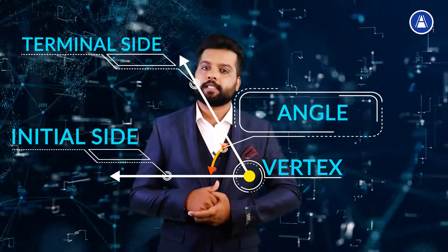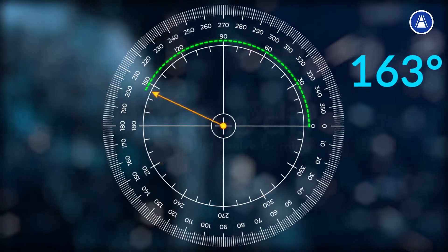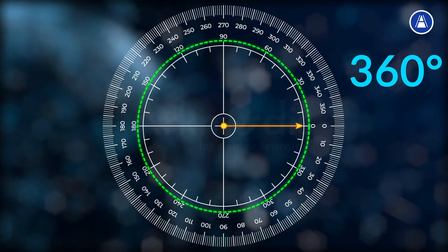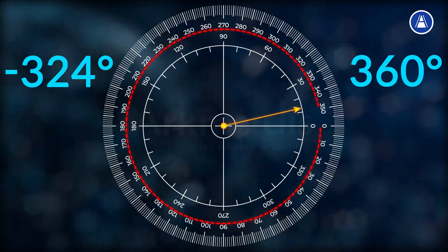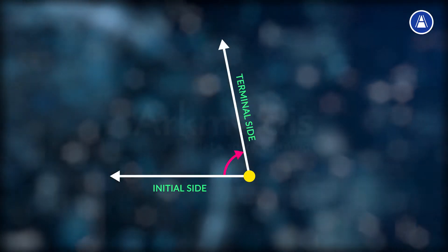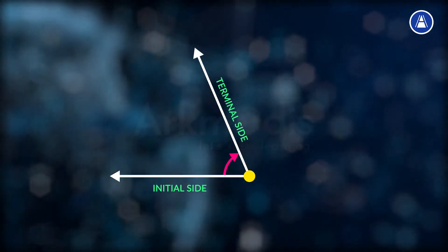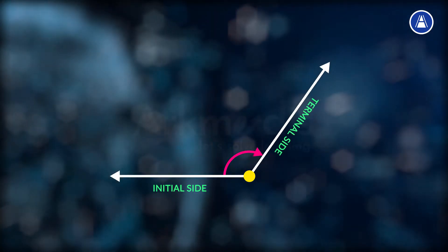You can also observe that we can move the ray in clockwise direction as well as anti-clockwise direction. If the direction of rotation is anti-clockwise, the angle is said to be positive. If the direction of rotation is clockwise, then the angle is said to be negative. The measure of angle is the amount of rotation performed to get the terminal side from the initial side.